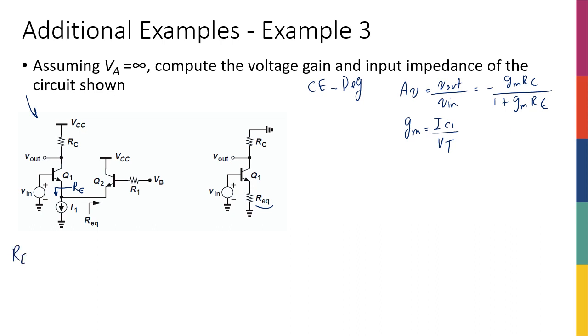So this RE is going to be basically this REQ, because this current source is a DC current source, so it's going to be open circuit when we're talking about AC and also small signal when we draw the small signal model. Therefore, I'm going to be just seeing the resistance looking into the emitter of Q2, which is REQ.